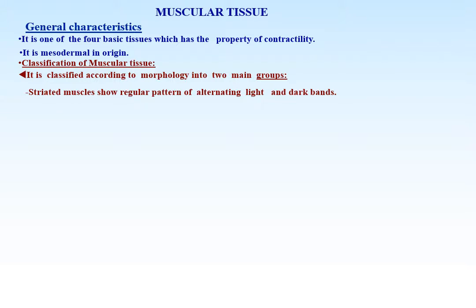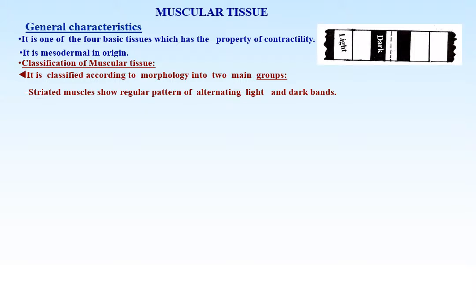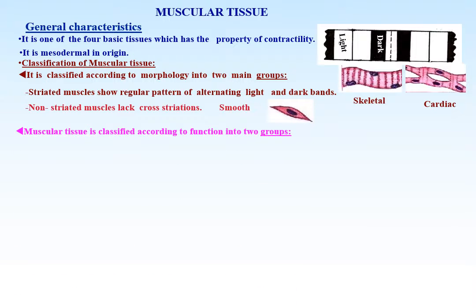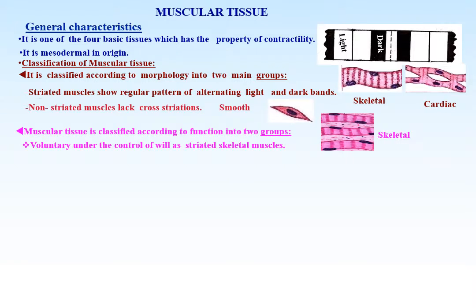Striated muscles show a regular pattern of alternating light and dark bands, as in skeletal and cardiac muscles. Non-striated muscles lack cross striations, as in smooth muscles. Classified according to function: voluntary, which is under the control of the will as striated skeletal muscles, or involuntary, which is not under the control of the will.